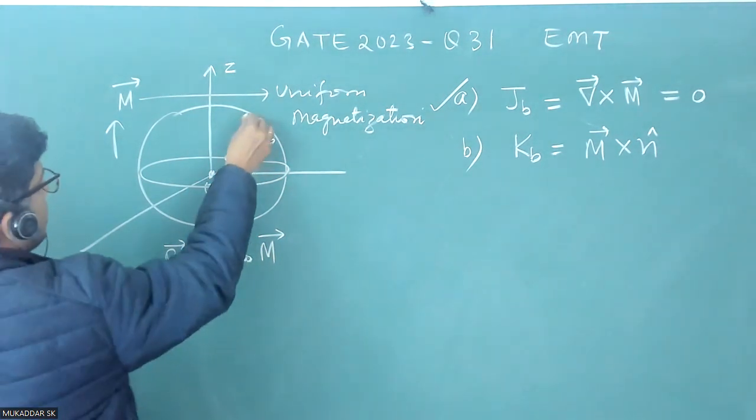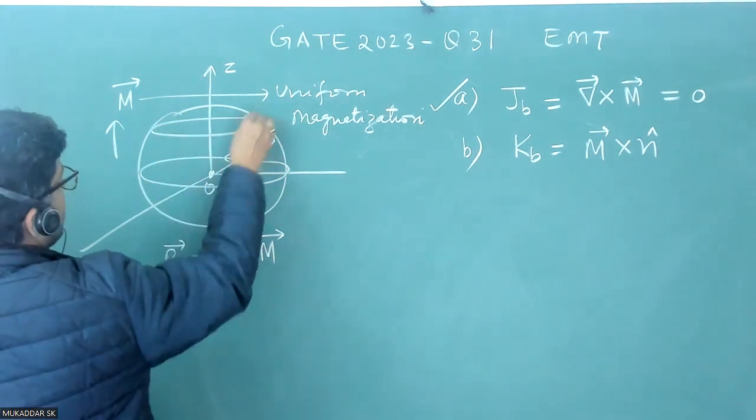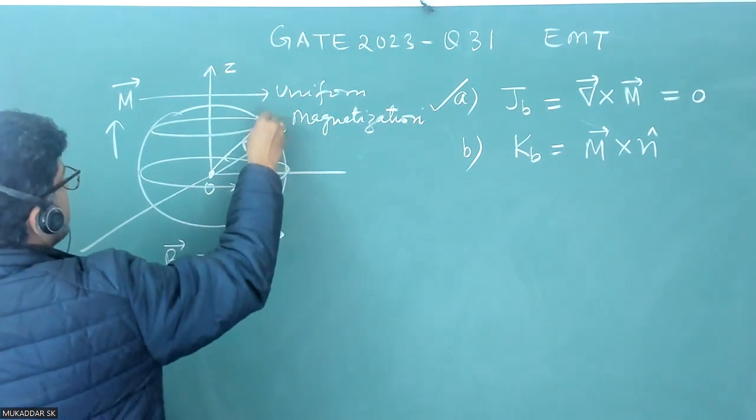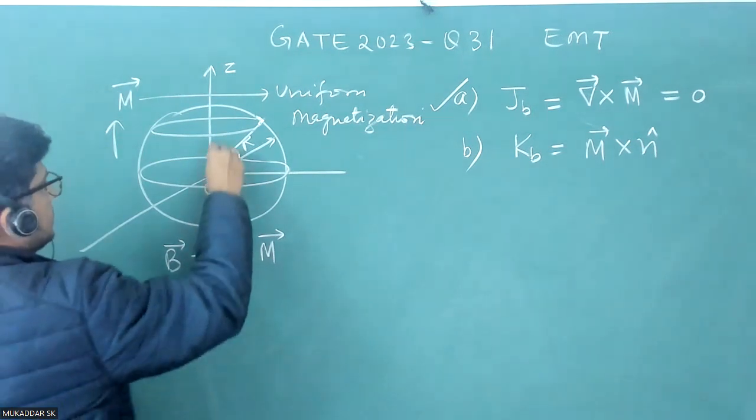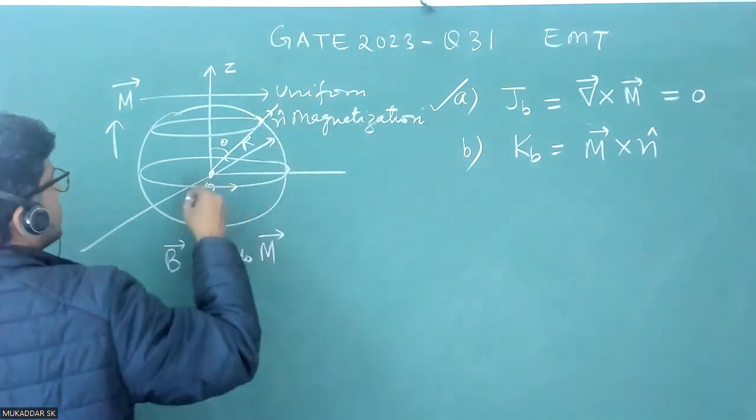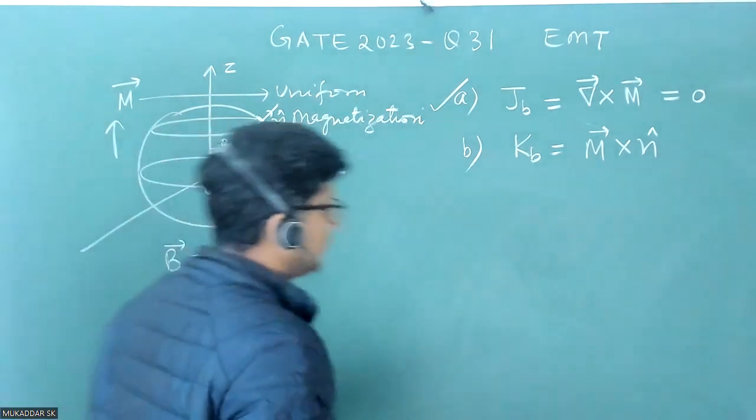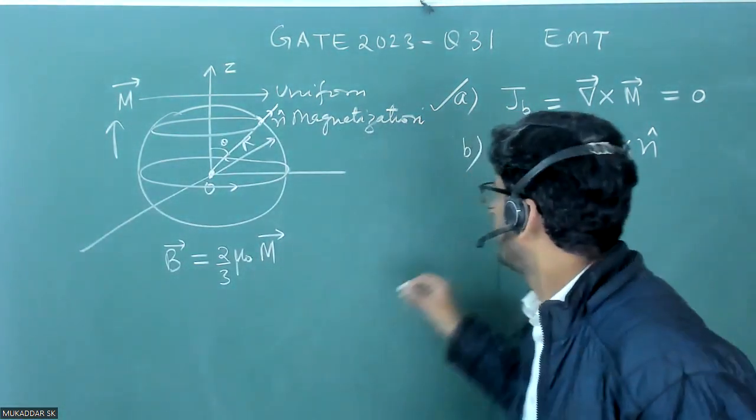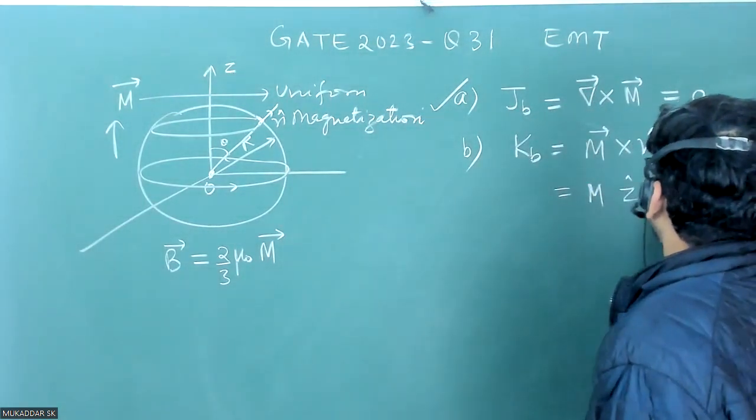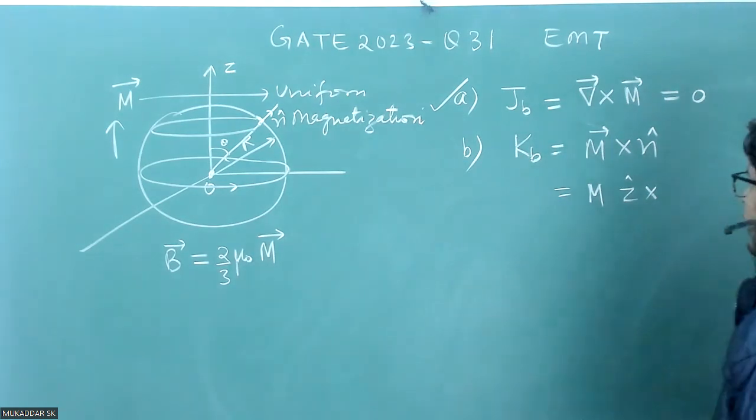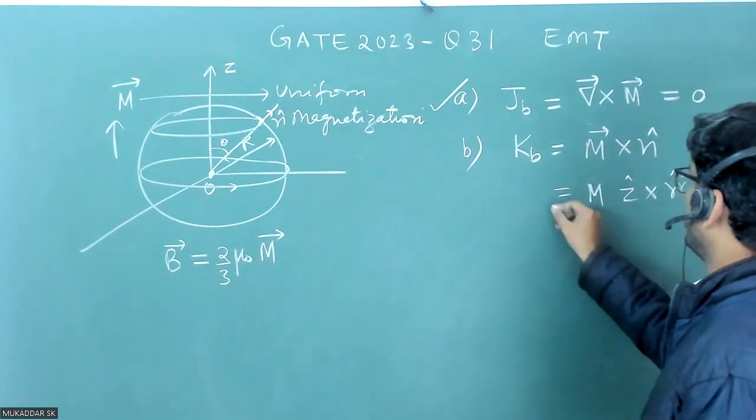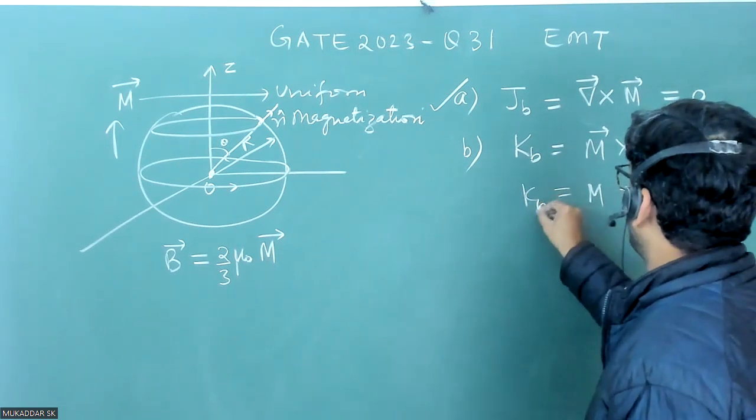If I check the surface current here, this will be angle theta, this will be N cap, which is in the direction of R cap. So if you see KB, it will be equal to M into Z cap cross N cap, which is R cap. If you put vector here, KB will be equal to M into sine theta.